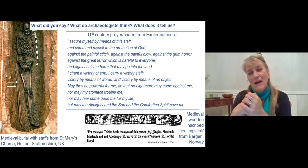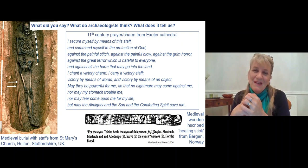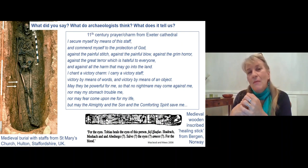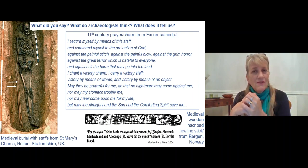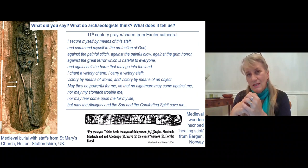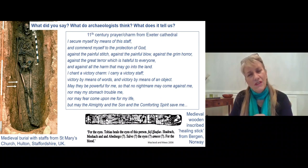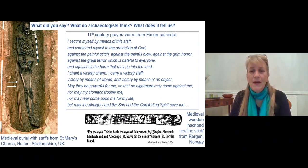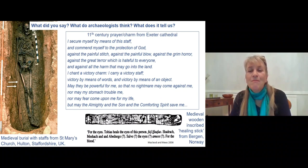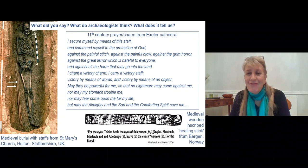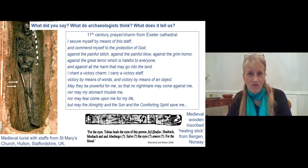Having had a chance to think about your interpretation — what do the archaeologists think? This is one of a relatively small number — only 2% — of medieval graves that were subject to quite a big study. The suggestion is that these staffs in particular: you look at that prayer, that charm — it talks about 'I secure myself, I help myself by means of this staff, commend myself to the protection of God against pain of various sorts, and against all the harm that may go into the land. I chant a victory charm, I carry a victory staff.' There's a sense in that poem that a staff is somehow protective.